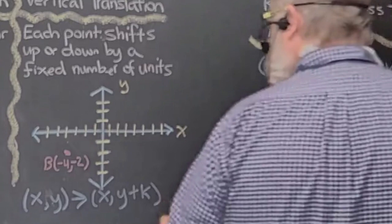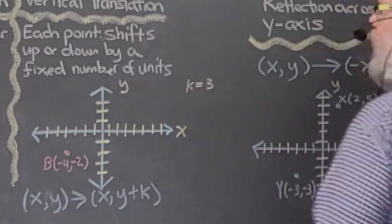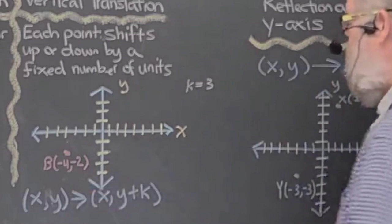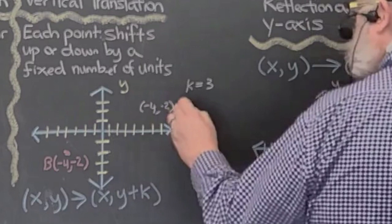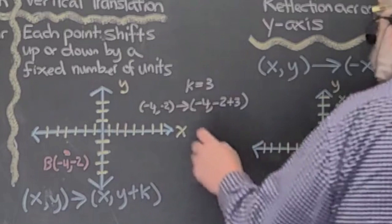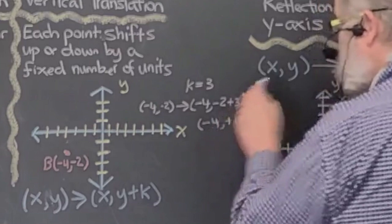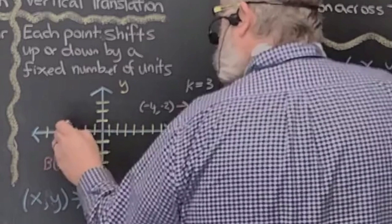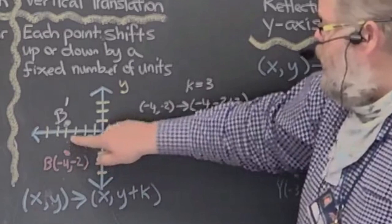Let K equal three. The ordered pair negative four comma negative two becomes negative four comma negative two plus three. Negative two plus three is positive one, so this becomes negative four comma one. That's V prime — a shift upwards three units.